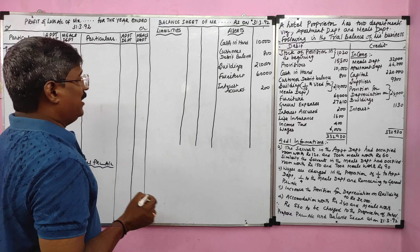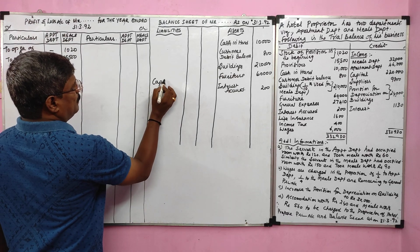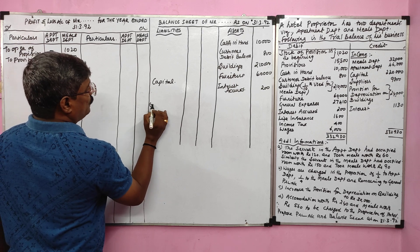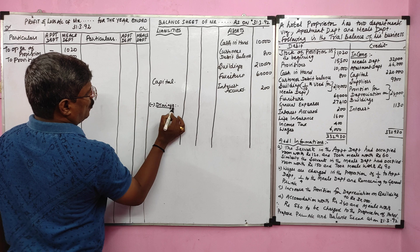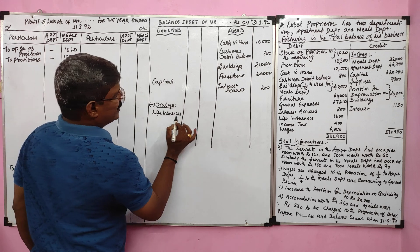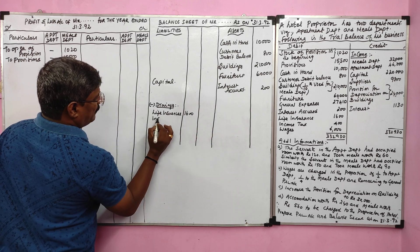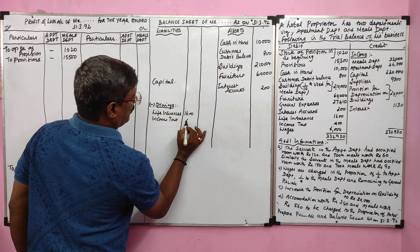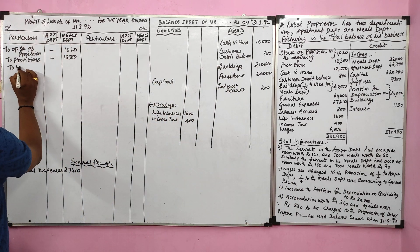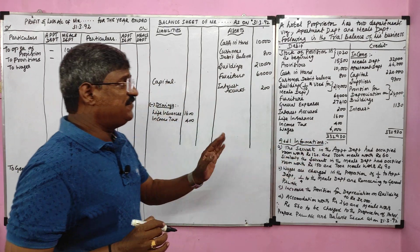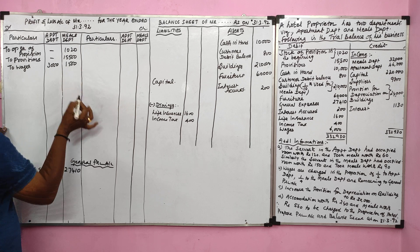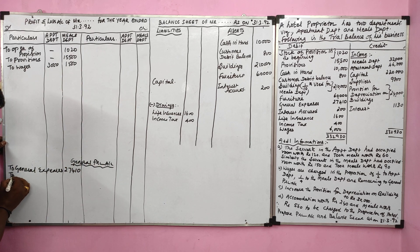Life insurance is a drawing and should be deducted from capital, recorded as drawings value 1,600. Income tax is also considered to be a drawing. Wages total 6,000: 50% (3,000) is recorded in the apartment department, one quarter (1,500) in the meals department, and the remaining quarter (1,500) is recorded in the general profit and loss account debit side, as per the adjustment.